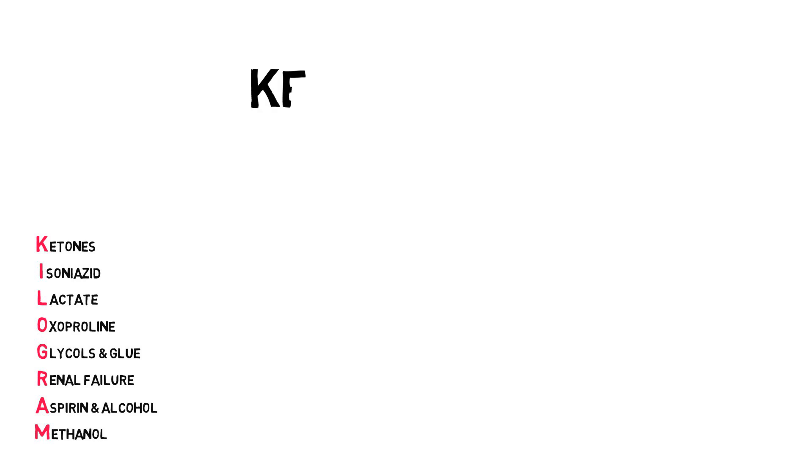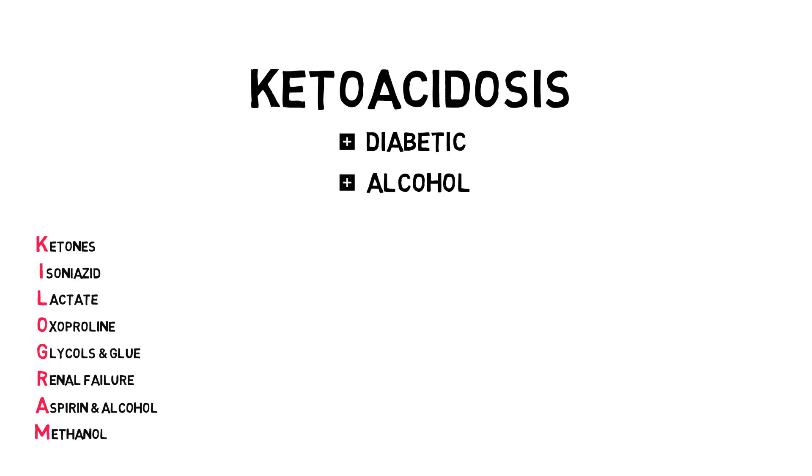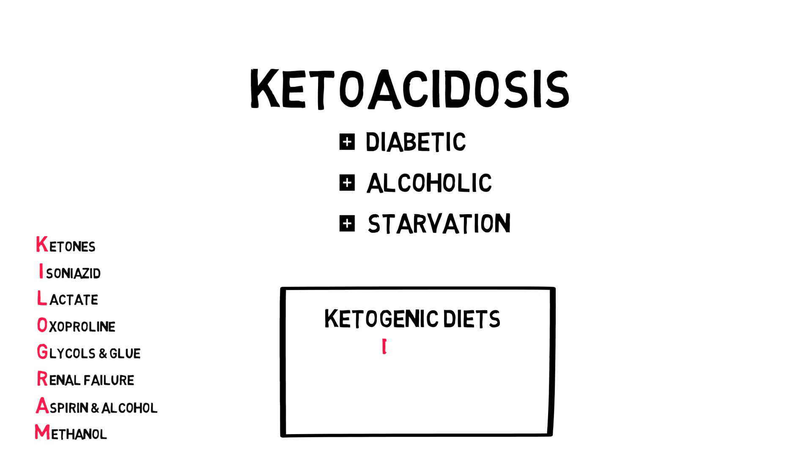Ketones, or keto acids, like beta-hydroxybutyric acid and acetoacidic acid, can cause metabolic acidosis when produced in abundance, which is seen in diabetic ketoacidosis and alcoholic ketoacidosis. Starvation ketoacidosis is only rarely seen, and to get this out of the way, ketones produced in ketogenic diets are so few they will not cause ketoacidosis. I'll get back to the treatment of ketoacidosis in a future video.